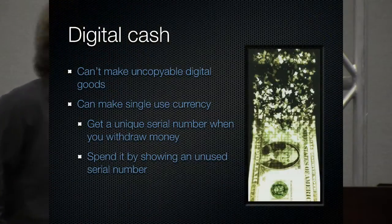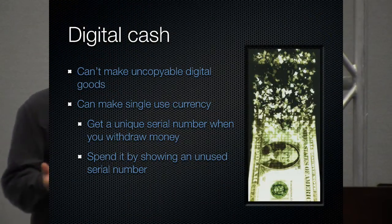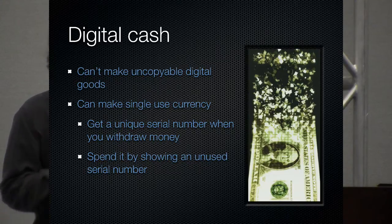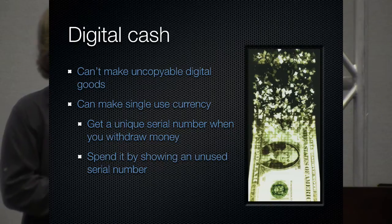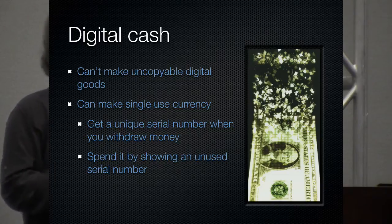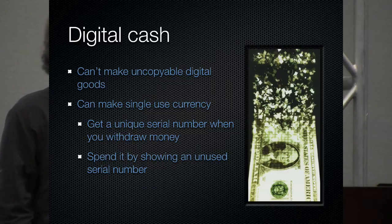And so the question then is, maybe we should have revisited this digital cash thing. And in fact, a bunch of academics did in the 80s and more recently. And the result basically is, you can't make uncopyable digital goods, but you can make single-use ones. So the idea here is if you get a coin from the bank, that coin has a serial number on it. You can make as many copies as you want, but it still has that serial number on it, because that's what the bank signed.